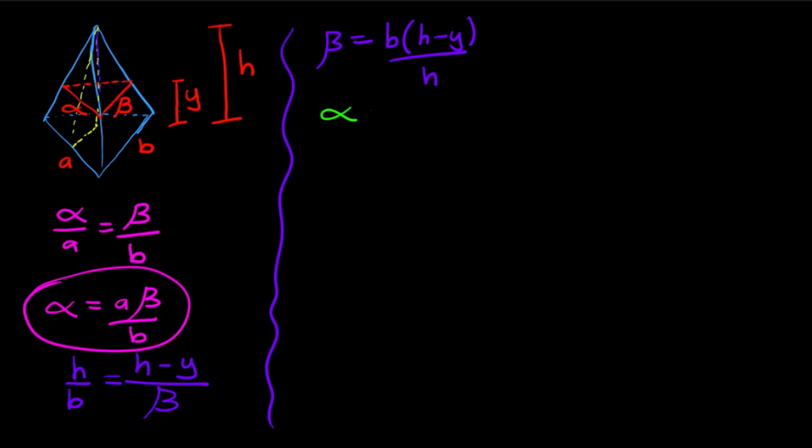So then alpha equals A times beta over B, which is A times B times H minus Y over H, over B. Notice that the B's cancel, so alpha equals A times H minus Y over H.